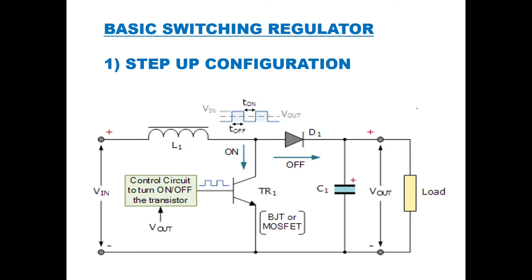For the step-up configuration, the input voltage V_in is applied with an inductor placed initially in the circuit. The inductor stores energy with a certain polarity (plus-minus) and current flows through it. When the control circuit gives a positive pulse (t_on), the transistor turns on, current passes through it, the diode conducts, the capacitor gets charged (plus-minus), and the output voltage is very low at this stage.